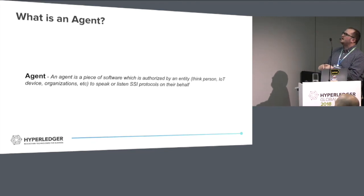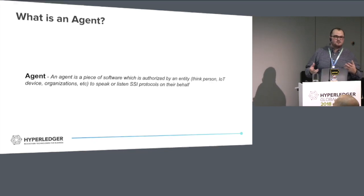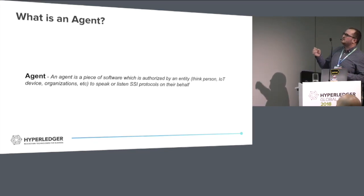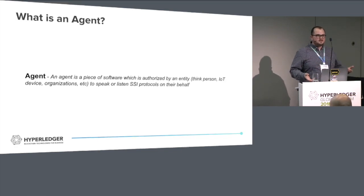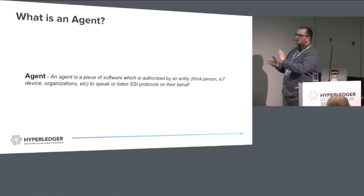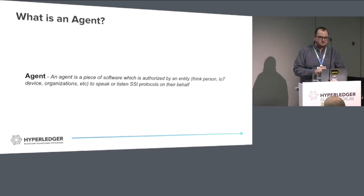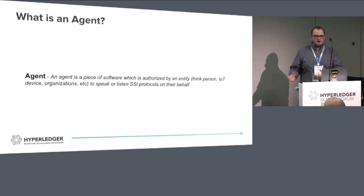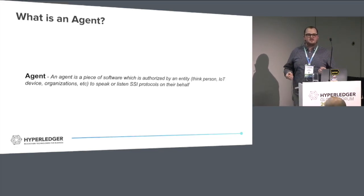An agent is a piece of software which is authorized by an entity - that can be a person, IoT device, organization, or something; basically a noun - to speak or listen to SSI protocols on their behalf. What this basically means is any piece of software can be an agent. You don't have to have this defined thing that only speaks SSI protocols - that's how some people come to the community thinking about an agent. An agent is really just any piece of software that can speak specific protocols.